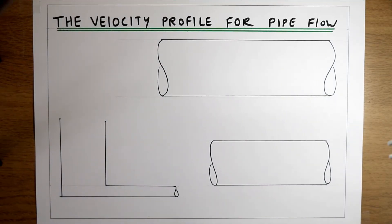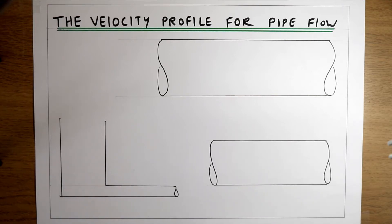In this video we're going to look at what happens to fluid when it flows down a pipe, assuming a non-ideal fluid.